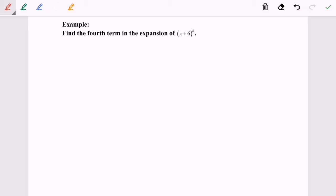So first we are going to list out the formula: T_{r+1} = nCr * a^(n-r) * b^r. So here we have the formula.